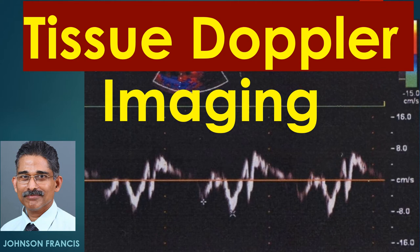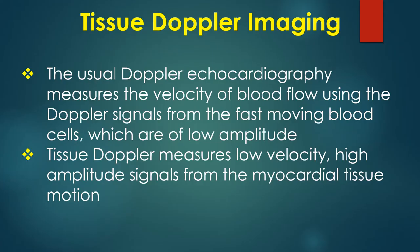Tissue Doppler imaging measures the velocity of myocardial motion using Doppler principles. The usual Doppler echocardiography measures the velocity of blood flow using Doppler signals from fast-moving blood cells, which are of low amplitude. Tissue Doppler measures low velocity, high amplitude signals from myocardial motion.